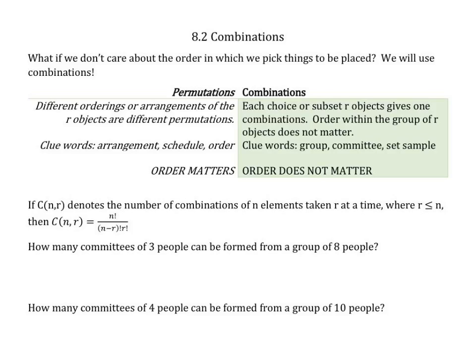Section 8.2, combinations. Unlike the previous section, what if we don't care about the order in which we pick things to be placed? We can use combinations. Specifically, permutations: order matters. Combinations: order does not.